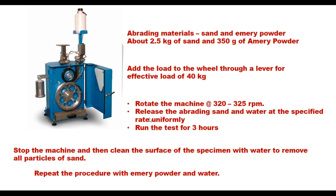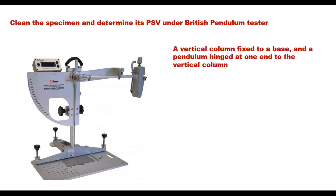Sand and water are released at the specified rate uniformly and the machine is run for three hours. After that the machine is stopped, the surface of the specimen is cleaned with water to remove old sand particles, and then the same procedure is repeated with emery powder and water. So polishing is done in two stages — one with sand and water, then with emery powder and water, each for three hours. After that, the specimens are removed from the road wheel, cleaned, and the PSV is determined under the British pendulum tester.